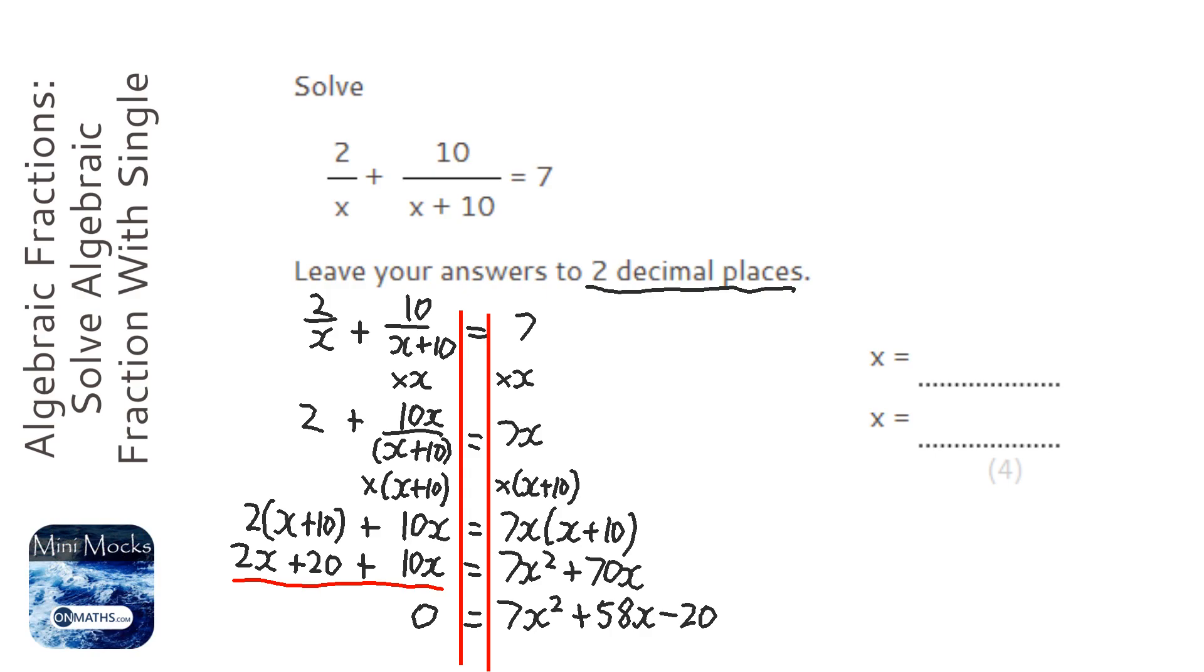So I'm going to press the fraction button first. And it's minus b, which is 58, plus or minus. So I'm going to do plus square root of b squared. So 58 squared minus 4 times a, which is 7, times c, which is bracket minus 20, close bracket. And then press down to go to the denominator and 2 times a.